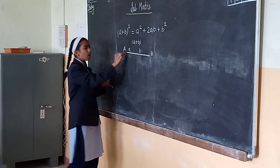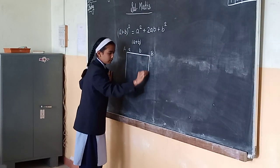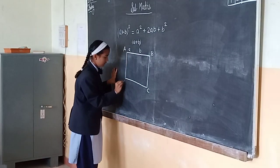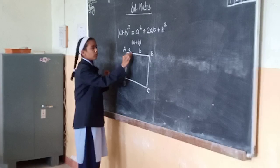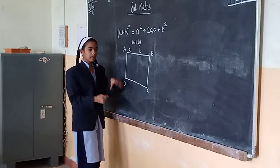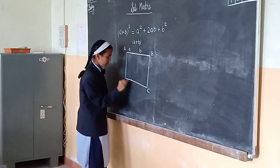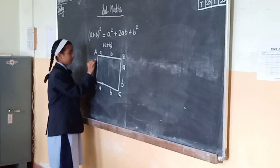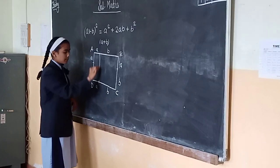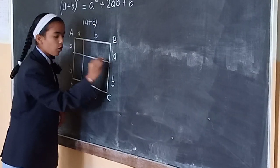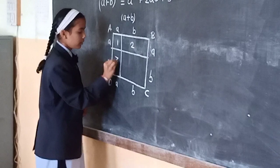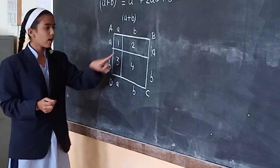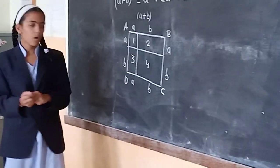To find (a + b)², we will form a square. We have taken a point on this segment, and similarly take a point on the other sides as well — labeling a, b, a, b. By joining these points, we will get 4 quadrilaterals, named 1, 2, 3, and 4, in which 1 and 4 are in the form of squares and 2 and 3 are in the form of rectangles.